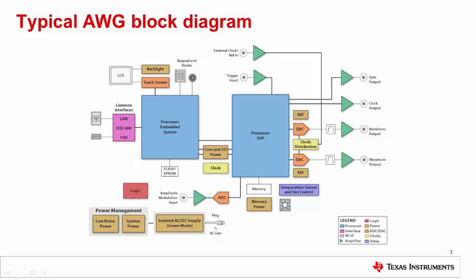The typical arbitrary waveform generator consists of input controls for the user to change and adjust the desired output signal. There are processors to generate the desired digital pattern and the analog output path, which includes the DAC to synthesize the signal and amplifiers to provide the DC coupled drive circuits. This presentation is going to focus on the different options for the analog outputs depending on the needs of the system.